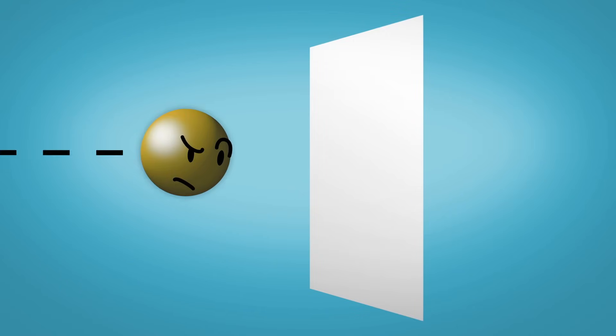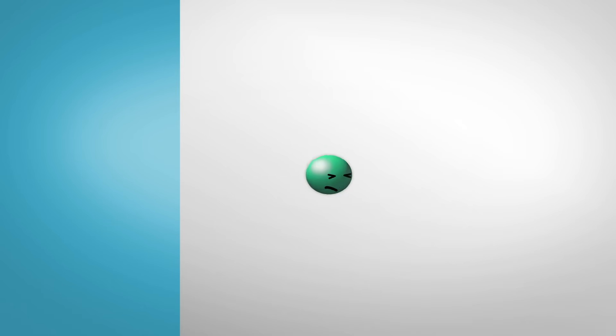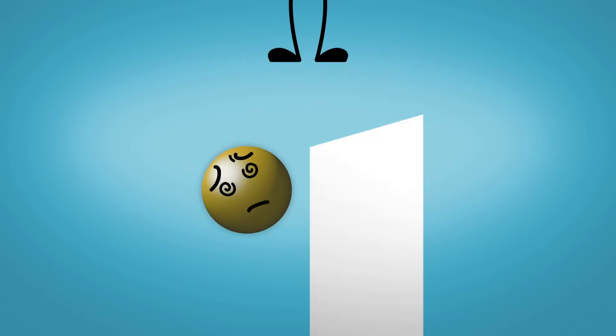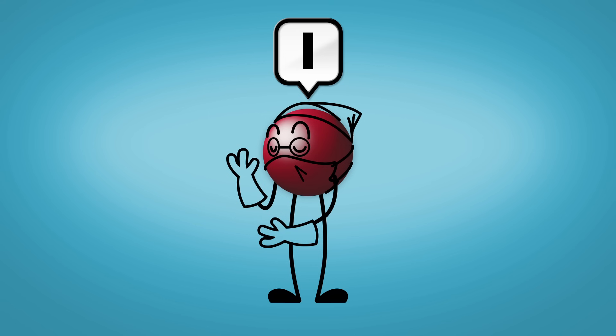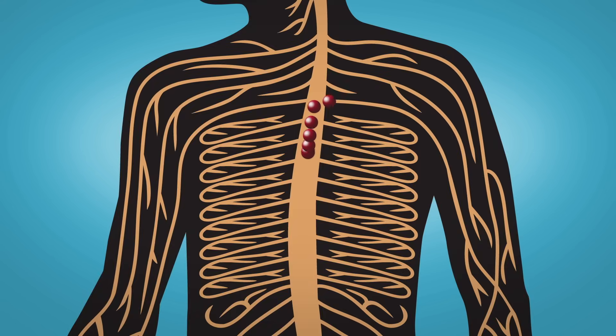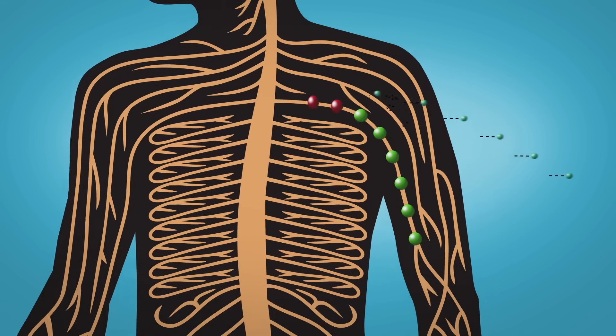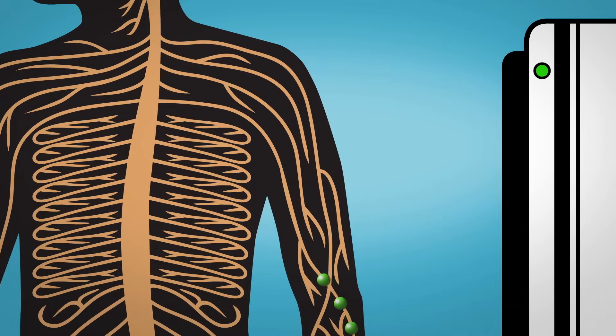Beta particles penetrate much further through materials than alpha can. Radioactive atoms are used in medicine as tracers to show where chemicals travel in the patient. Beta particles are emitted and have enough energy to emerge from the body and be detected.